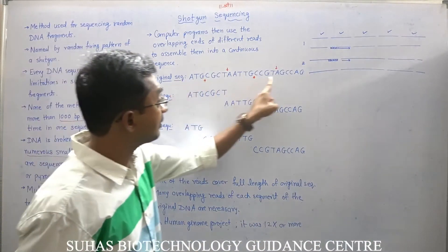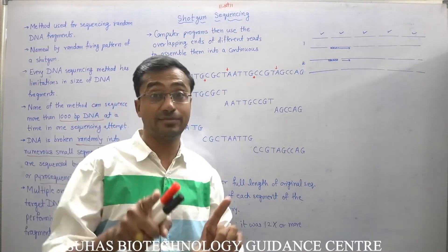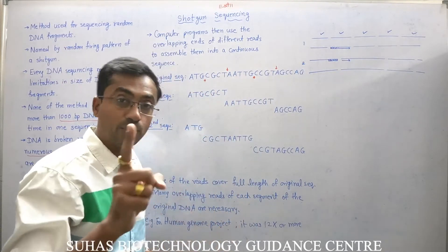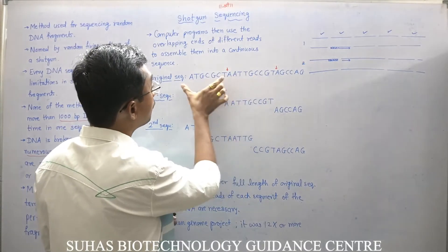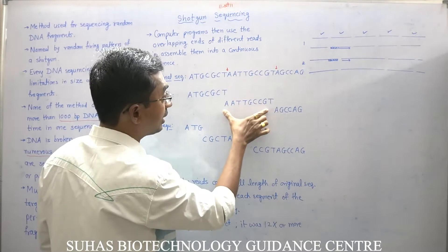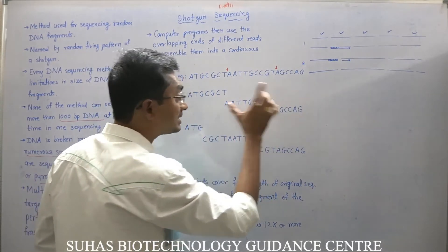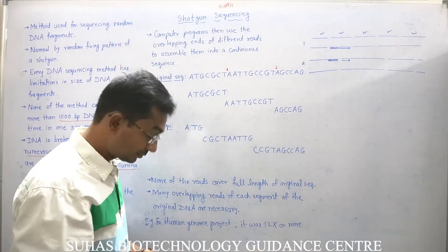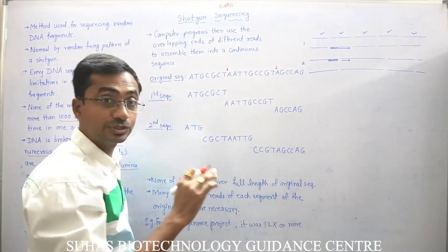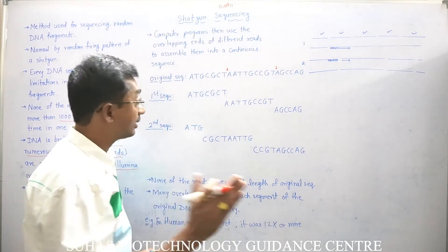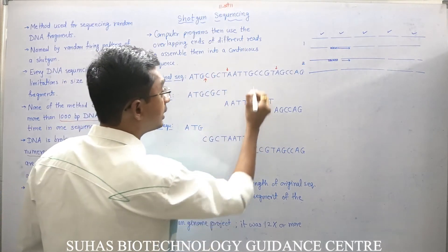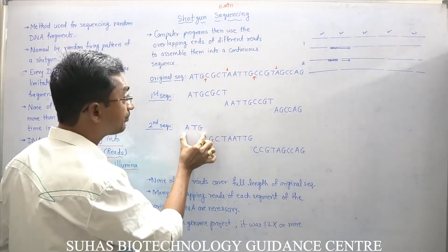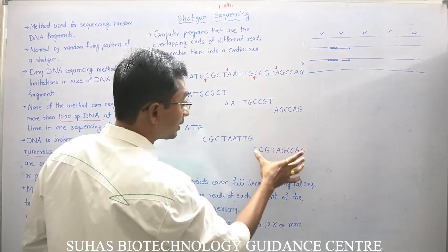Let me take an example. Suppose this is the original sequence which we want to sequence. In the first attempt, we break it using a certain chemical or endonuclease, which cuts somewhere here and somewhere here, resulting in three fragments: the first fragment starting with ATG, then the rest of the second fragment, and the rest of the third fragment.